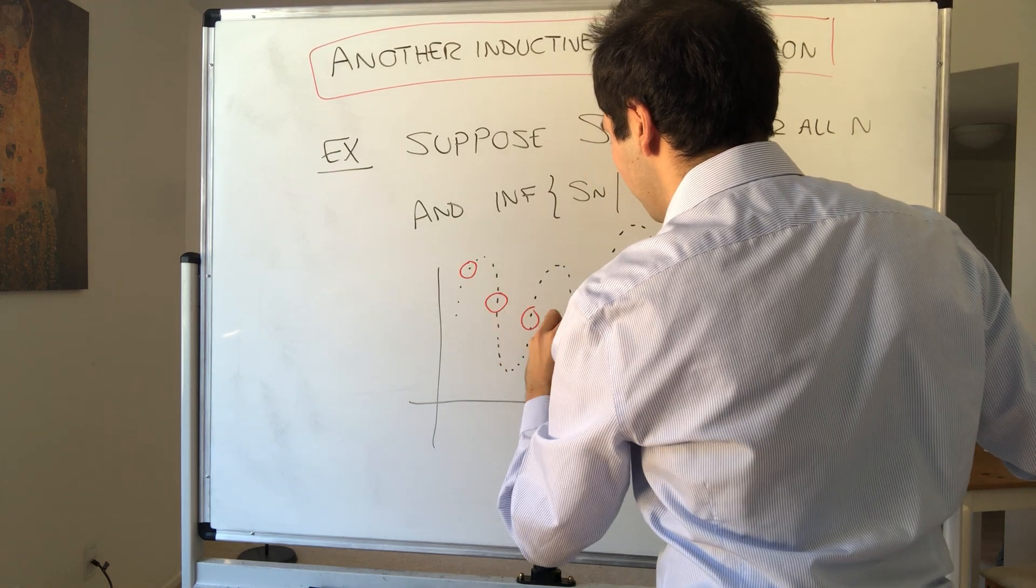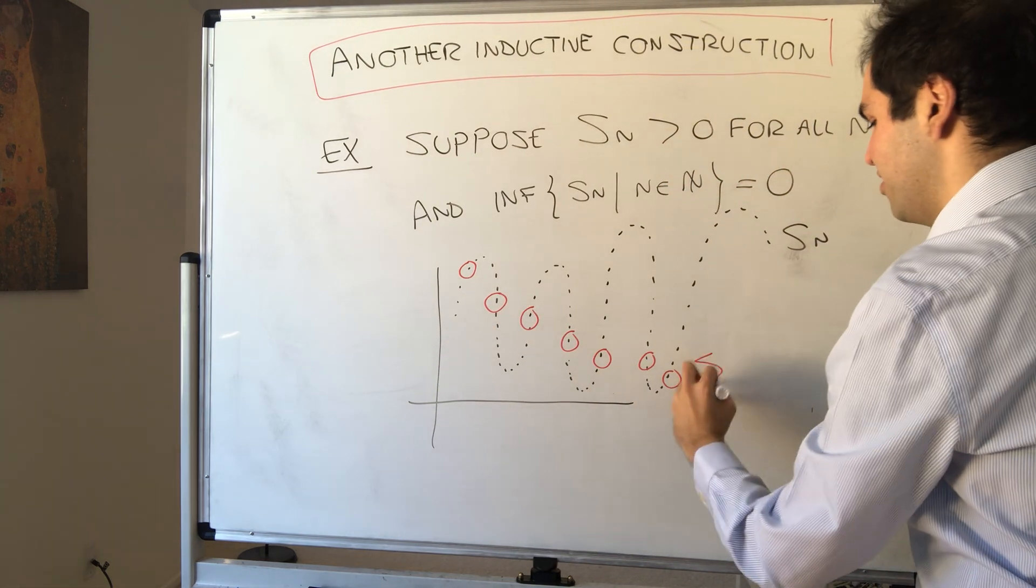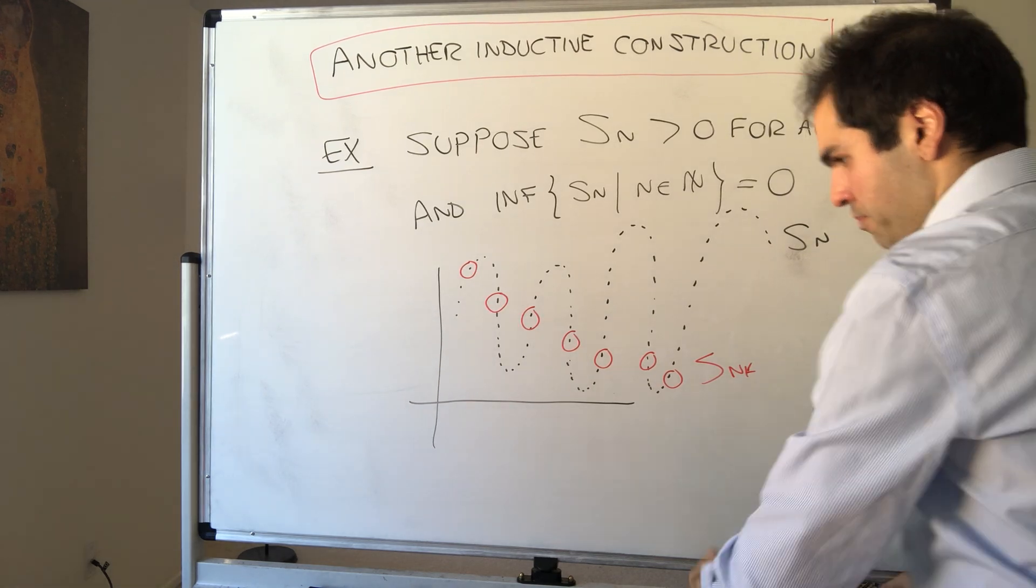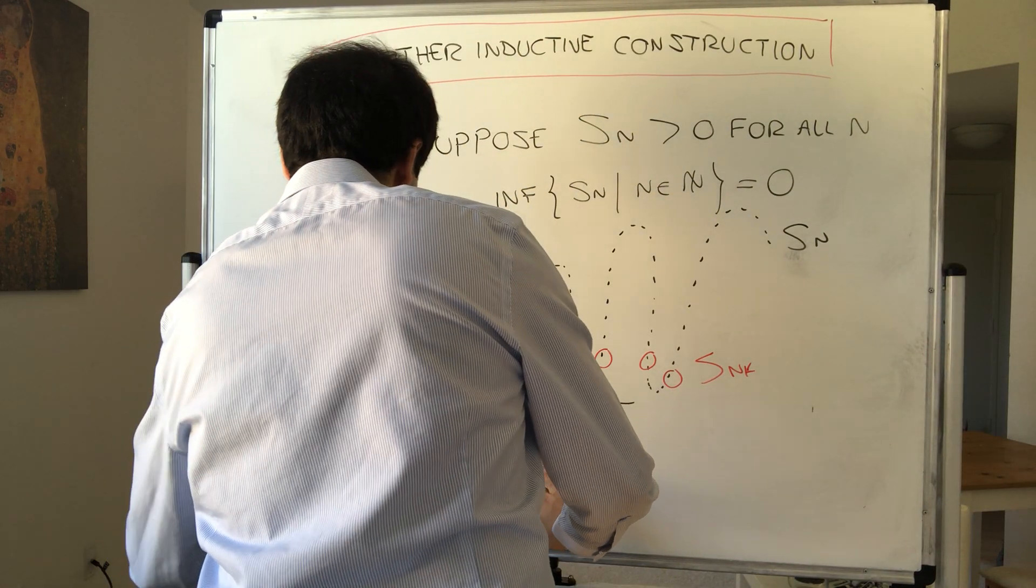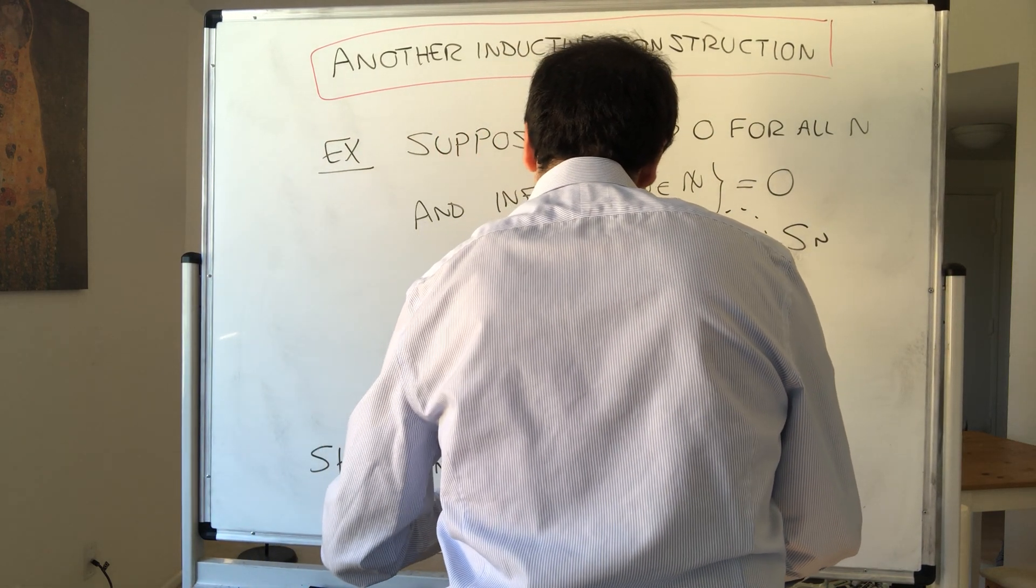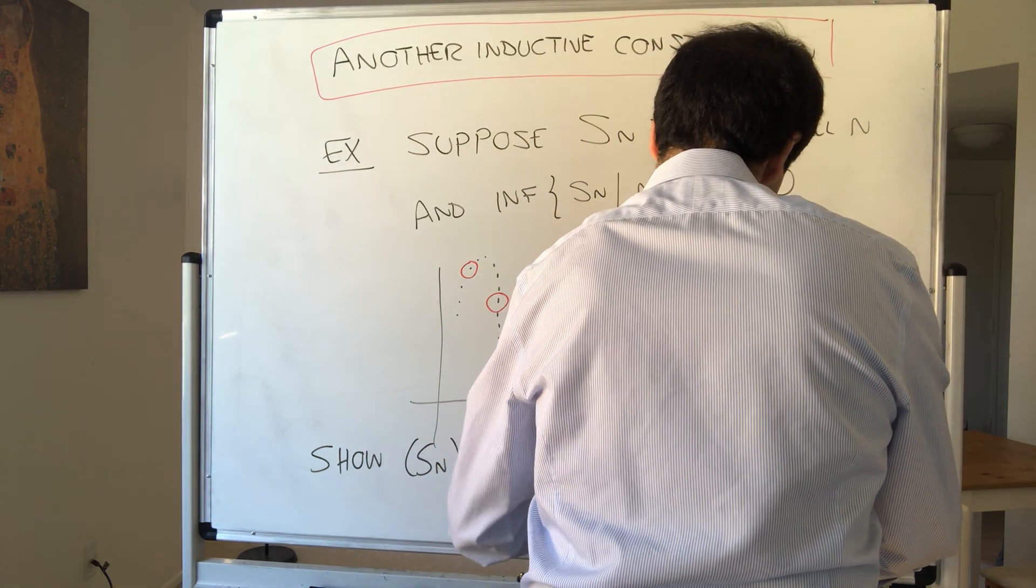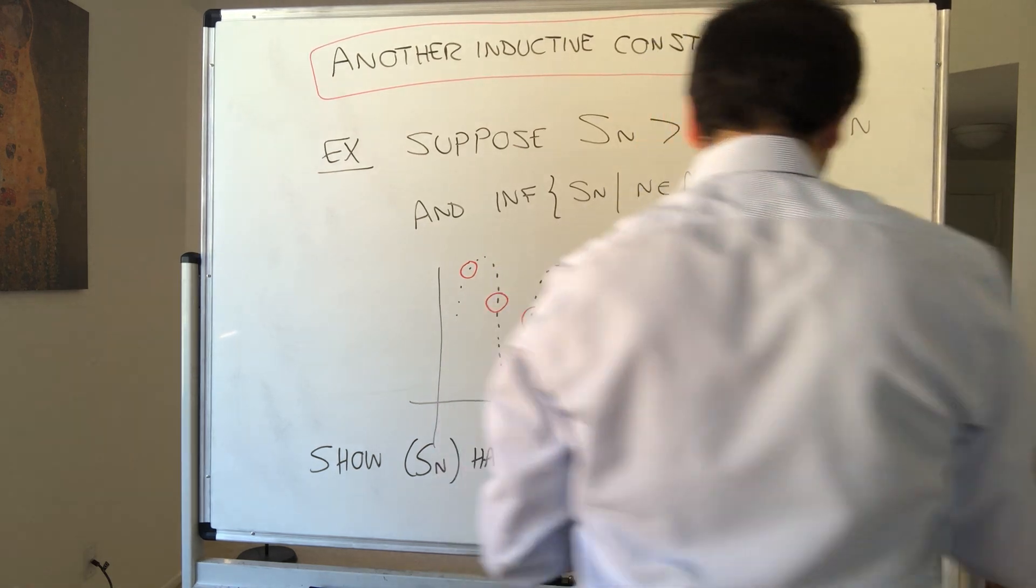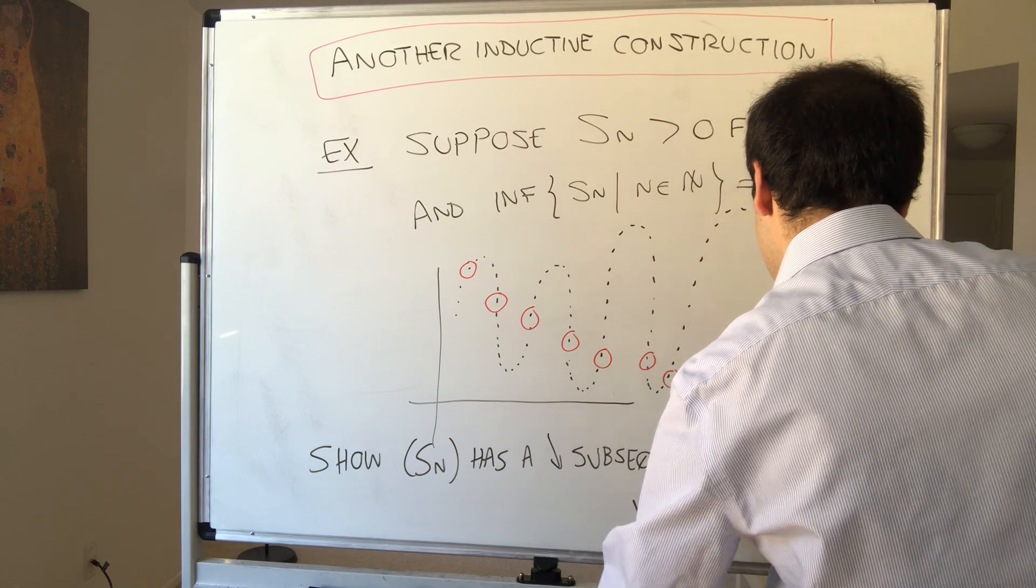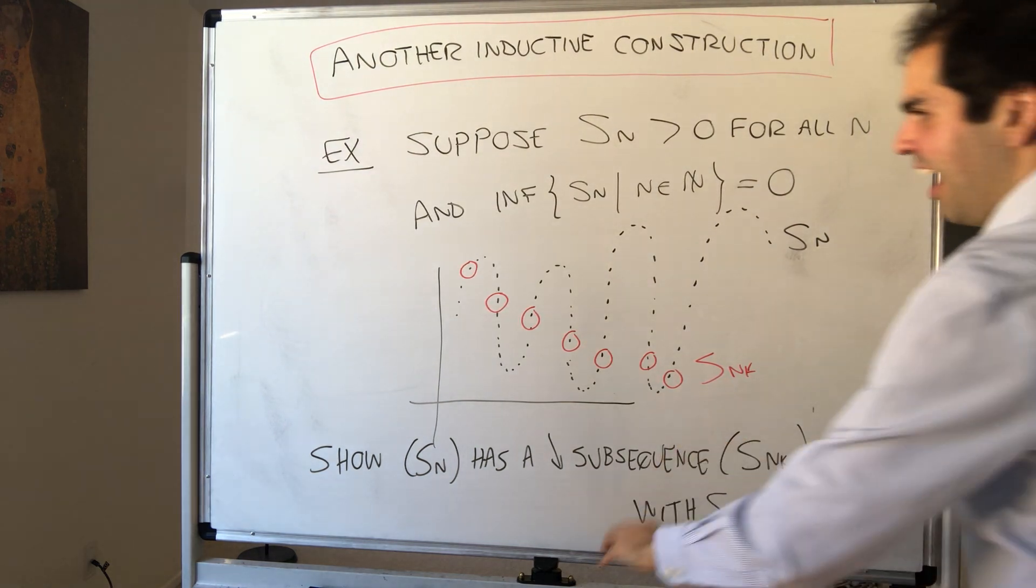There's a decreasing express train that goes to zero. Kind of like here. So there's a subsequence Snk that goes to zero. So let's show that. Show Sn has a decreasing subsequence Snk with Snk going to zero as k goes to infinity.